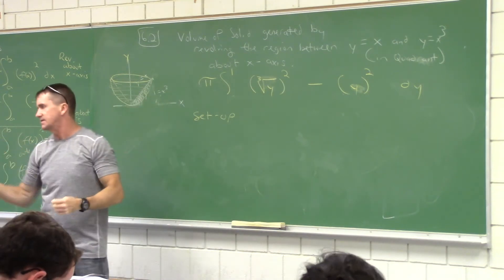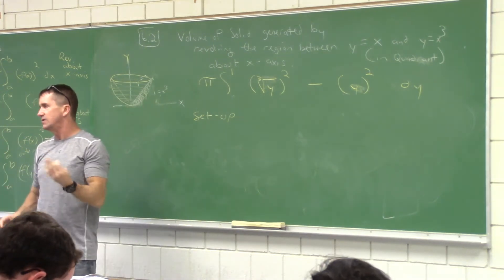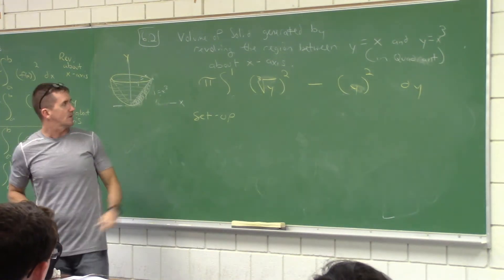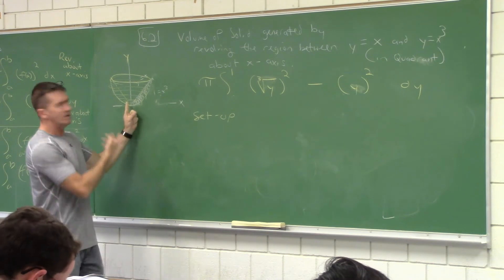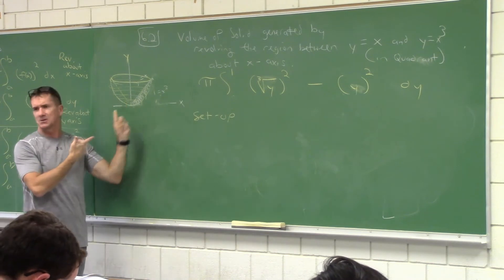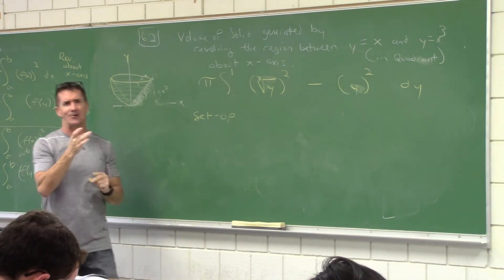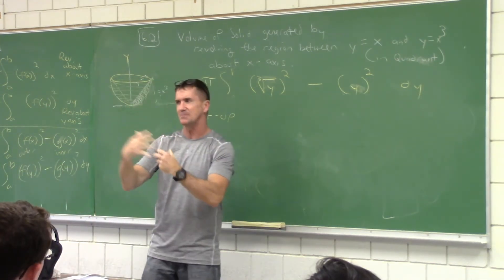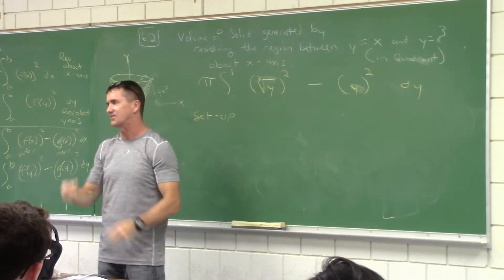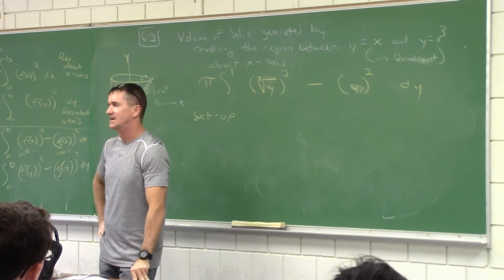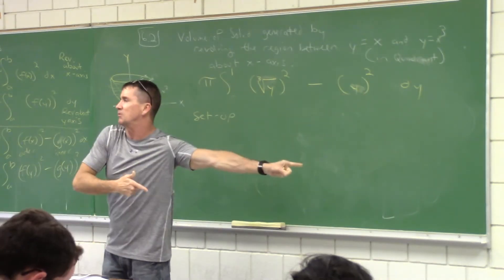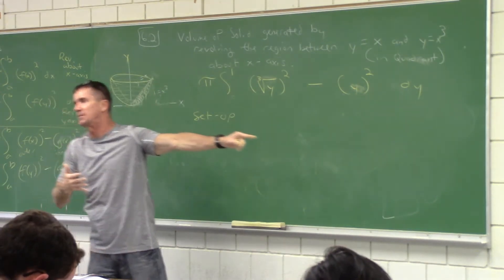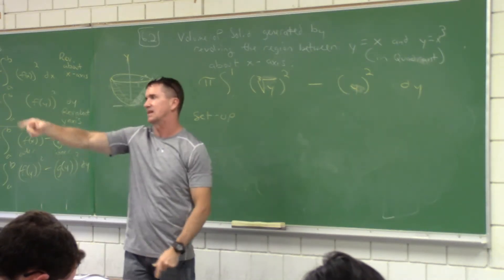If you did want to calculate this and find the actual answer — sometimes students are like, wouldn't it give you the same answer? Be careful. It may look like it'd give you the same, but sometimes it's slightly different. We got 4/21π for the last one. This one might be slightly different.